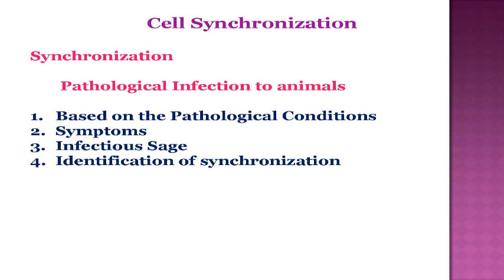At this synchronization stage, we can't treat the disease easily. We need to go to high doses of drug molecules. Initially we can stop the infection with drug molecules, but when it goes to the second stage, treatment becomes very rare, very difficult. This is mainly found in cancer.